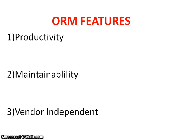The third feature is vendor independence. ORM frameworks are vendor independent. In JDBC, the queries are directly dependent on the specific database you're using. ORM frameworks abstract the SQL queries and support different databases. Whatever the database you are using, ORM converts the generated queries into the appropriate database-specific format. That is one of the main features of ORM.